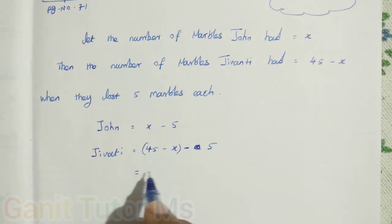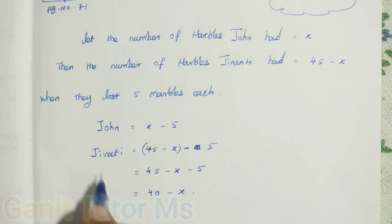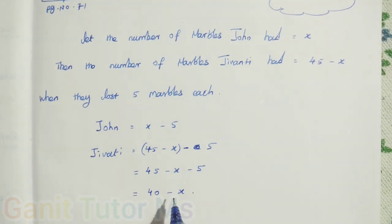You can solve it by the numerical values: 45 minus 5, 40 minus x. So now finally, Jivanti had 40 minus x. And they said, the product of number of marbles they now have is 124.